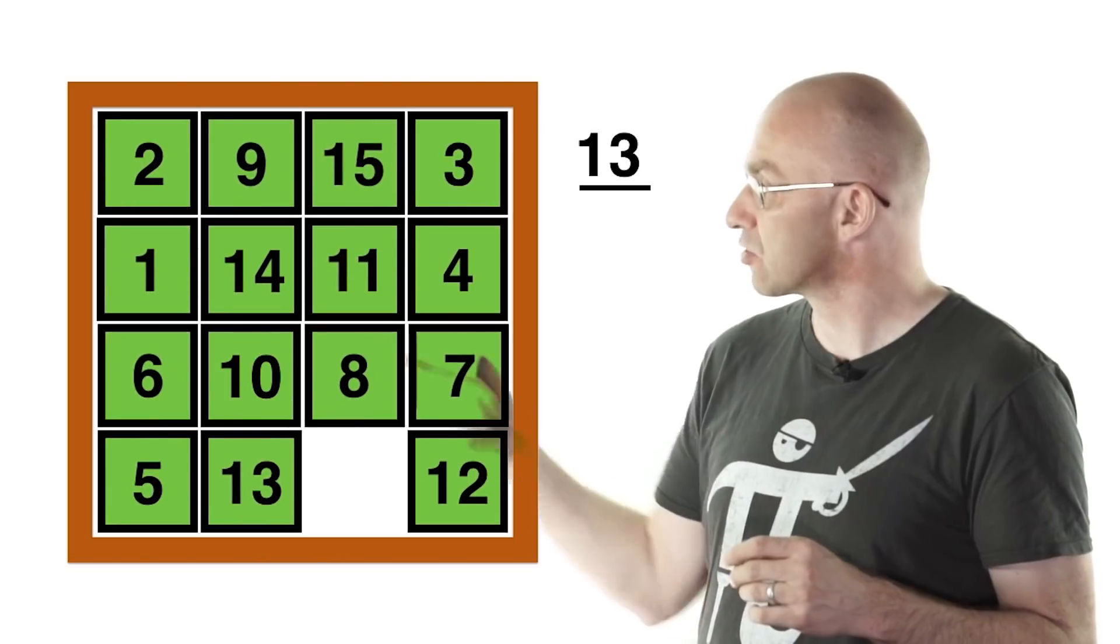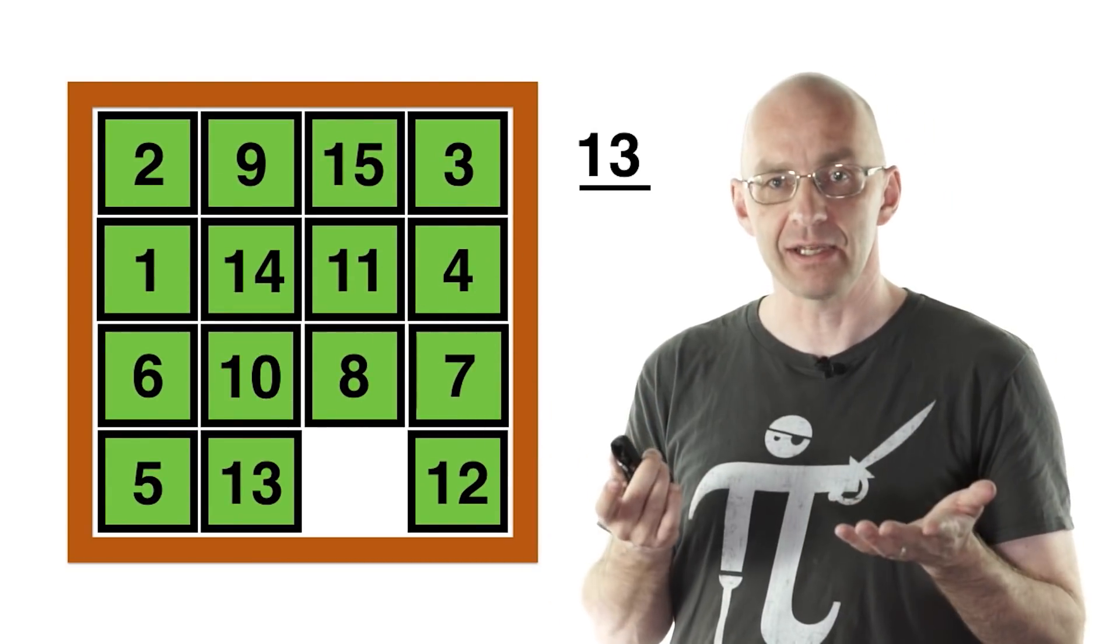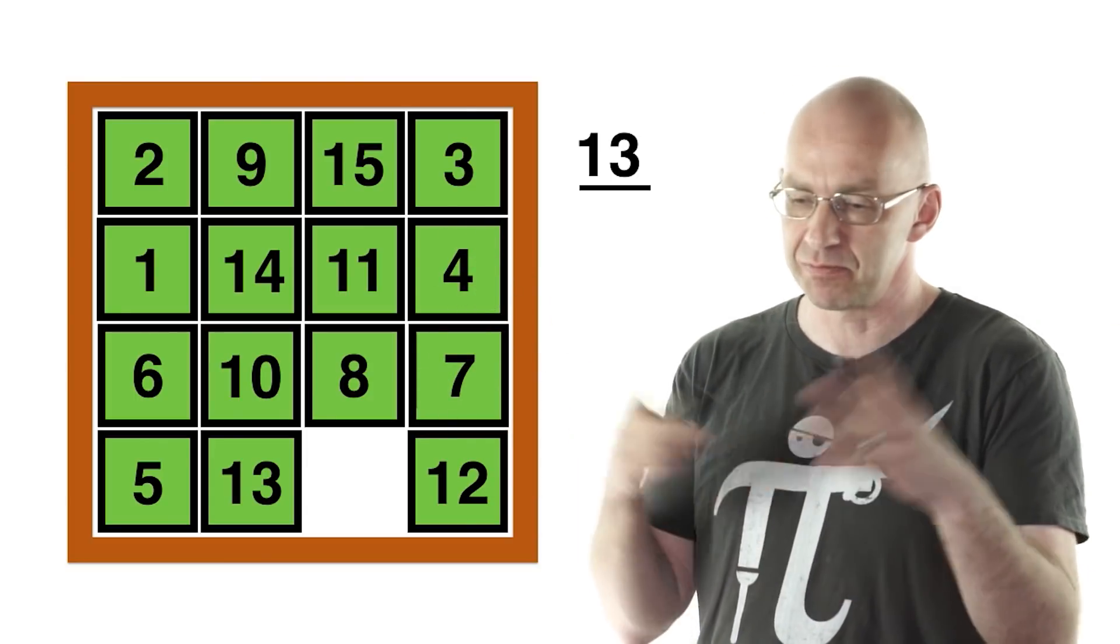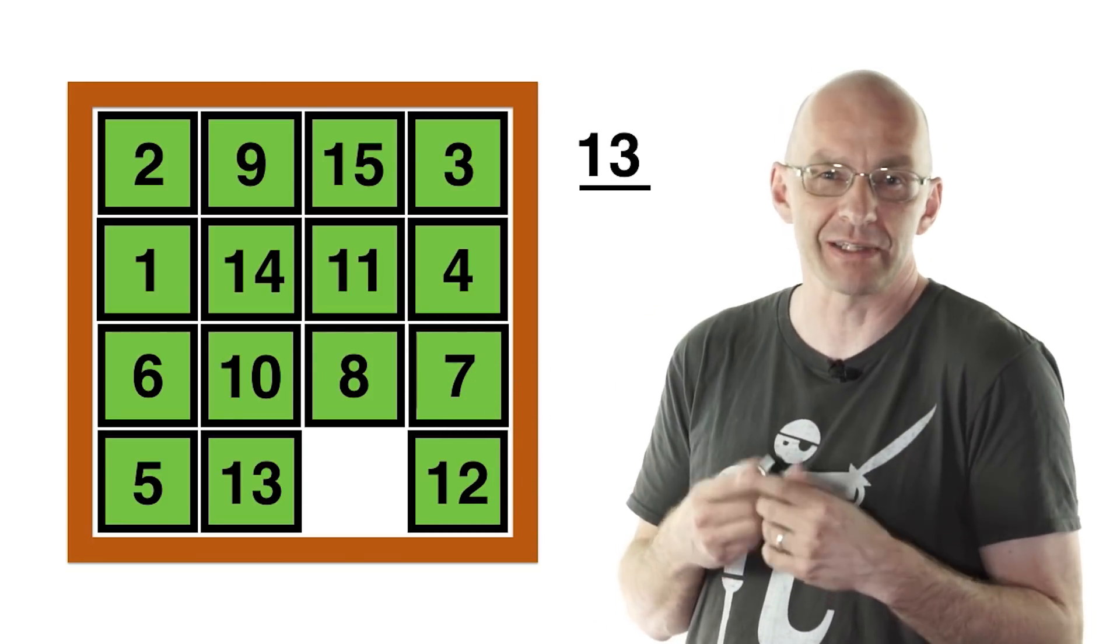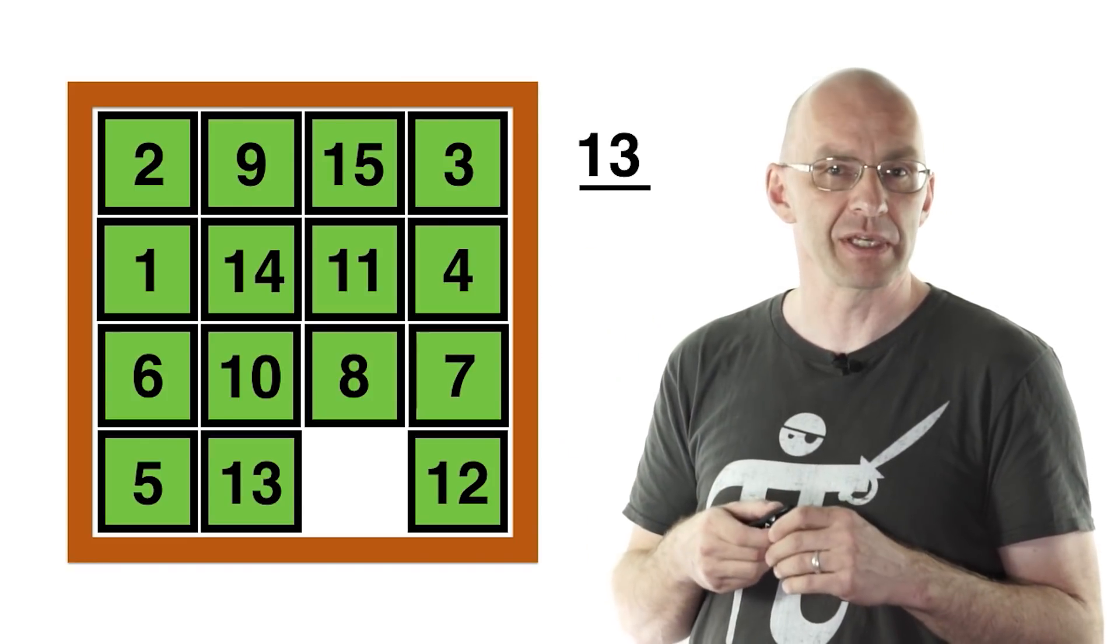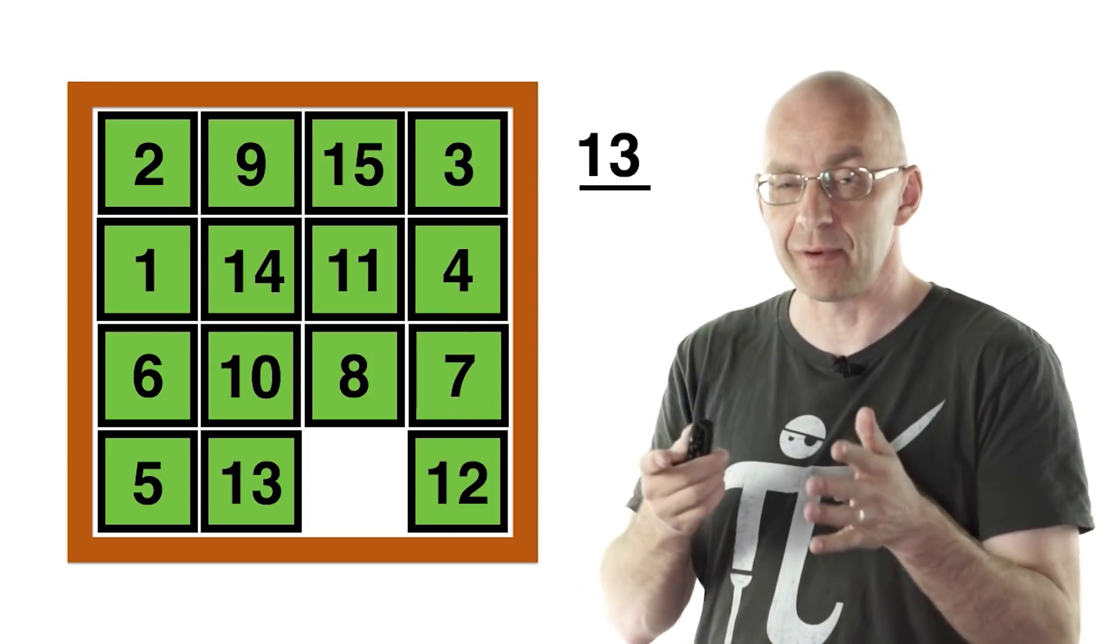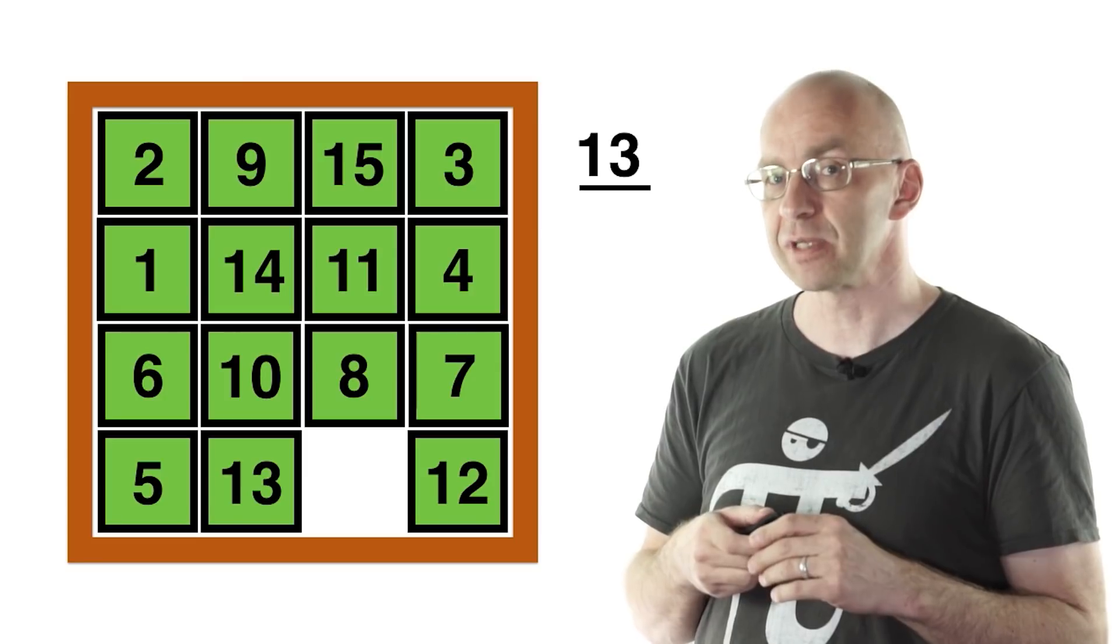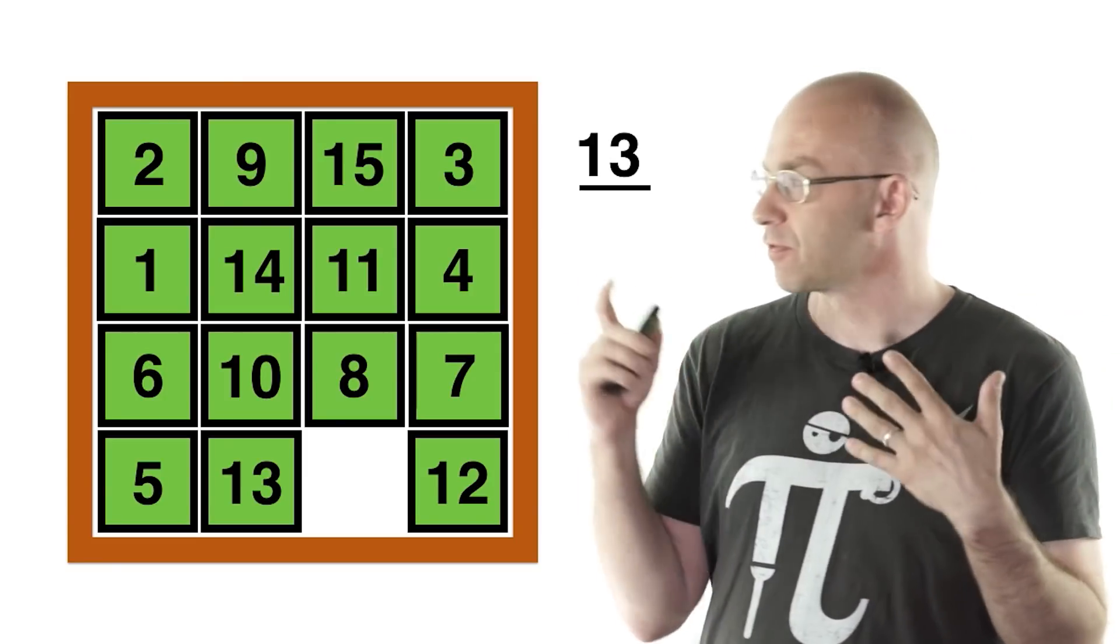Now we could try this again, same starting position. If we tried it again, really going wild, putting somebody in charge who doesn't know anything, maybe eventually they solve the puzzle this way and they'll come up with a different number. That number will also be odd. In fact whatever you try here, as long as you come up with a solution, it's always going to involve an odd number of switches. That's the yin and yang of permutations.